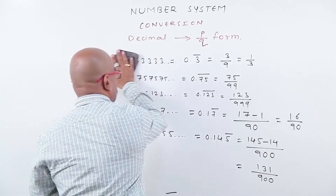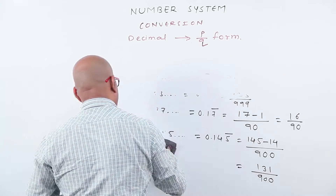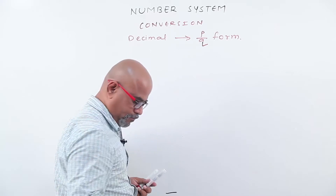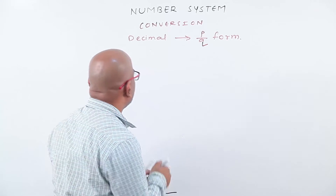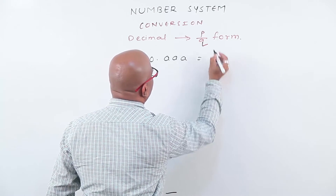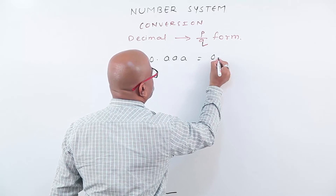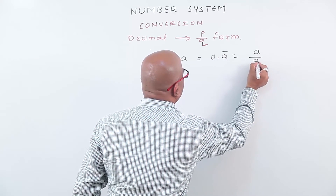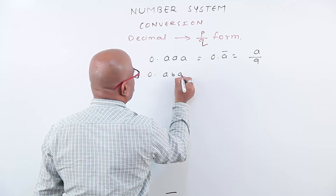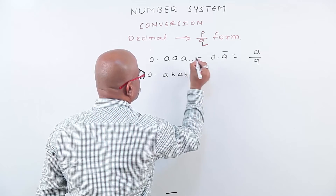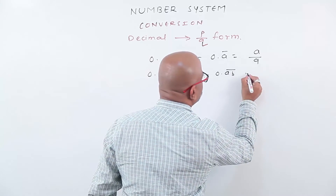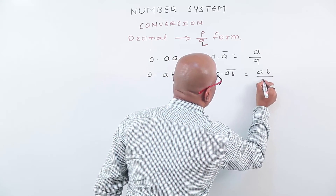Now let us write the formula for this. If one number is recurring — a, a, a — we write reduced form a by 9. If two numbers are recurring — a, b, a, b and so on — we write reduced form ab upon 99.